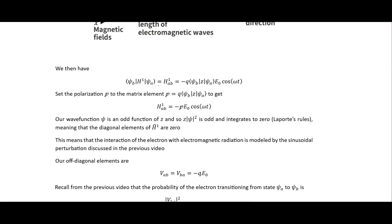We then have the transition with our first-order Hamiltonian, which equals this matrix element of z multiplied by negative q and the amplitude of the electric field times the cosine function. This rate here is just the polarization of the electromagnetic radiation, which we will set to the script p, so we end up getting our expression in terms of this polarization.